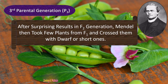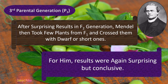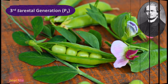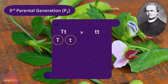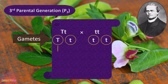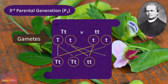After surprising results in the F2 generation, Mendel then took a few plants from F1 and crossed them with dwarf or short ones. The results were again surprising but conclusive. Here is the cross again between an F1 plant and a short or dwarf plant. These are the gametes, and again they have equal probabilities of fertilization with each other.